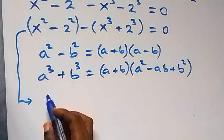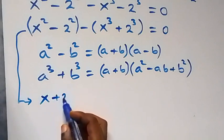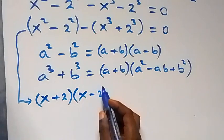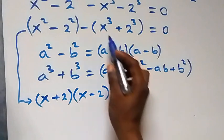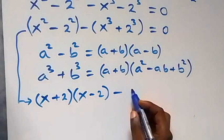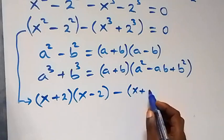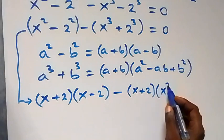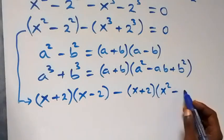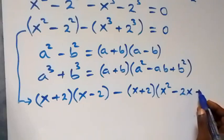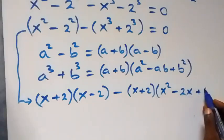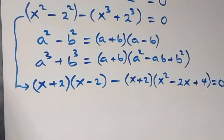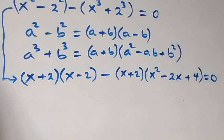Then here we can write this as (x plus 2)(x minus 2) minus, applying the sum of cubes, (x plus 2) times (x squared minus 2x plus 4), now equals to zero.